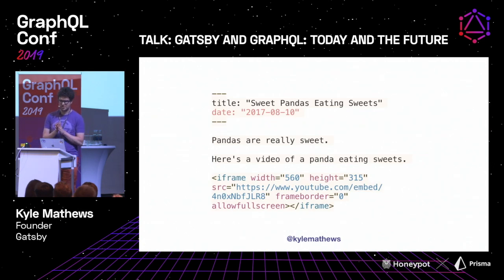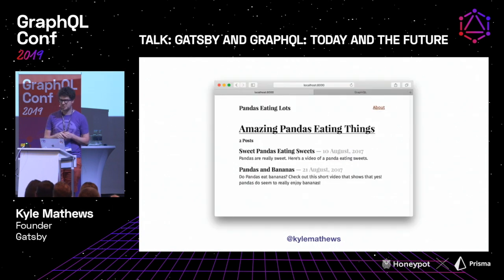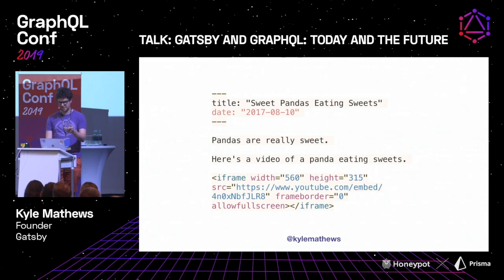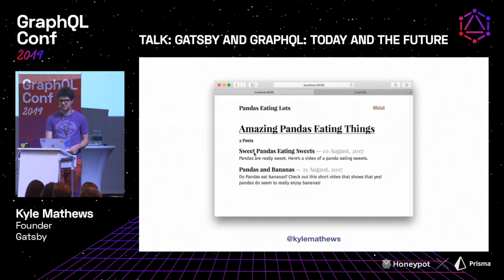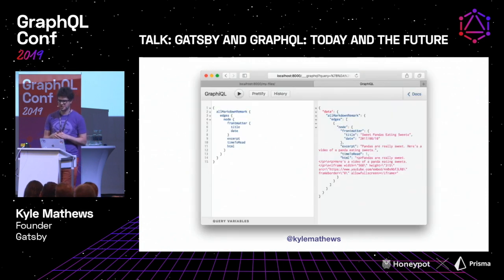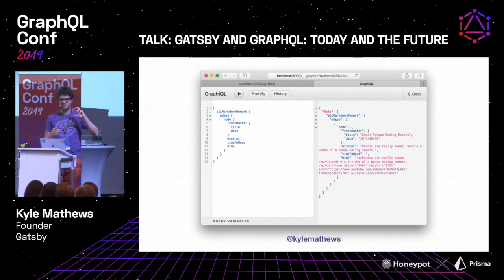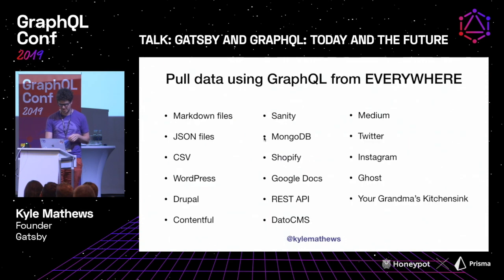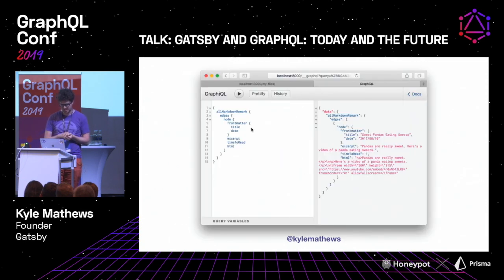Gatsby does a lot of things. Here's one example: you have a markdown file, and Gatsby can take that and turn it into a website. The title is 'Sweet Pandas Eating Sweets' — this is the front page of a blog — with a neatly formatted date, summary, and excerpt from the post. It does that using GraphQL, so each component page in your site can have a query to pull in just what it needs: the title, date, excerpt, time to read, and the HTML.